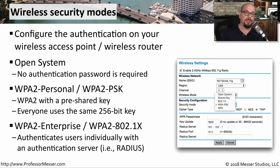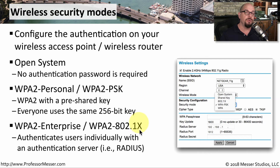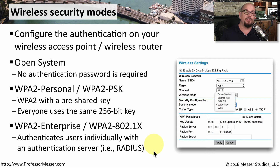If you change the pre-shared key on the access point, you would have to also change all the configurations of devices connecting to that wireless network. In a much larger working environment, you're not going to give everybody the same key and expect it to remain secure. In that case, you would use WPA2 Enterprise, also referred to as WPA2 802.1X, because we use 802.1X to provide network access control. You would log in with your normal username and password, authenticate against a back-end AAA server, and then gain access to the wireless network. If you leave the organization, your access to all networks is disabled, and if someone changes their personal password, it doesn't affect authentication for anyone else.